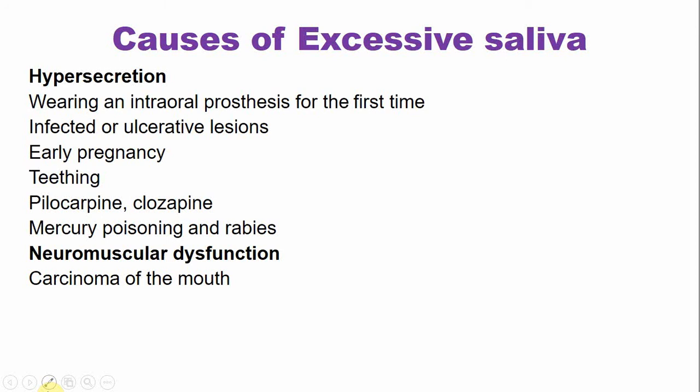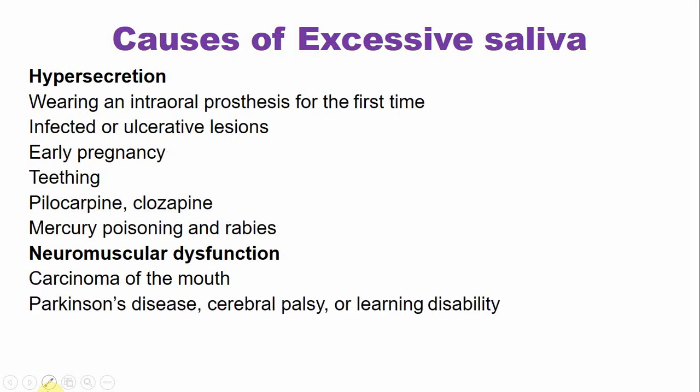Regarding neuromuscular dysfunction: carcinoma of the mouth can metastasize and make deglutition or swallowing difficult, so even though saliva production is normal, impaired swallowing reflex makes it appear as excessive saliva. Parkinson's disease, cerebral palsy, or other learning disabilities also impair swallowing, making it appear as if there is excessive saliva production.